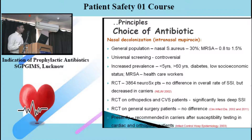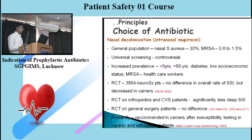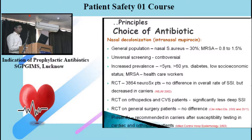Regarding nasal decolonization using intranasal mupirocin: universal screening has been advocated by various authors but is not accepted in all guidelines, so universal screening is not suggested. The epidemiology of nasal contamination shows around 30% of the general population has nasal Staph aureus contamination, of which 1% is MRSA — but not all of these translate into SSIs.